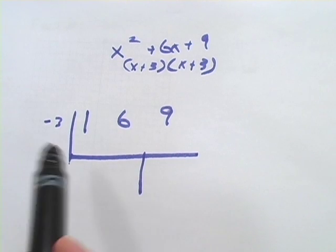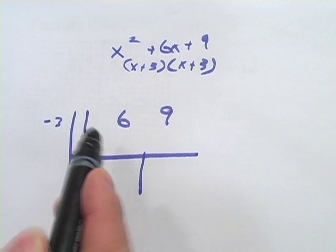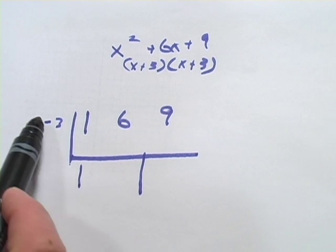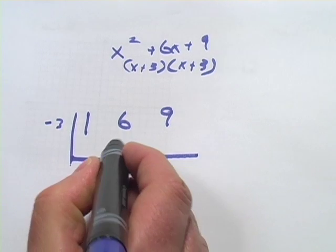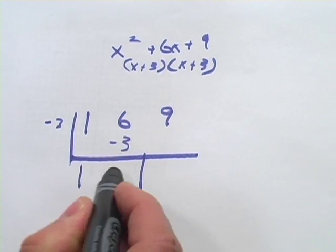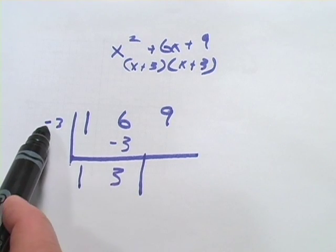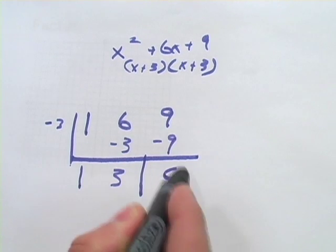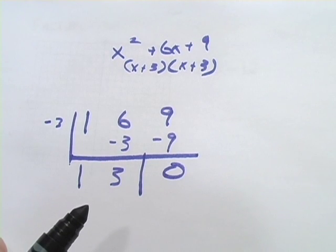Now to do the synthetic division, we start here in the first column and we just bring the 1 down. Whatever number is there, you bring it down. Then you multiply 1 times negative 3 and put that up here. Then you add down the column. So 6 plus negative 3 is 3. Then we go back to multiplying. Negative 3 times 3 is negative 9. Then we add down the column. And lo and behold, we get a 0 there, which is wonderful.